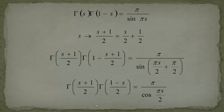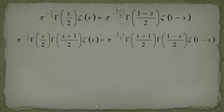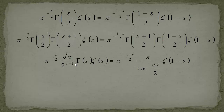Now let's start the proof. We begin with the Riemann functional equation and multiply in gamma((s+1)/2). We can now apply the modified Legendre duplication formula: gamma(s/2) multiplied by gamma((s+1)/2) becomes the combined expression. On the right-hand side we apply the modified Euler reflection formula — substituting s by (s+1)/2 — which gives us π over cosine(π·s/2).